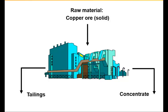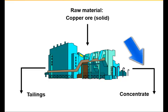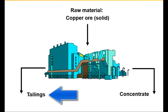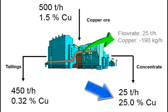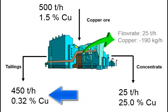To illustrate the process of data reconciliation, let's consider a copper concentrator plant with one feed and two outputs: the copper concentrate and the tailings. The solid mass flowrate and the copper content are measured for each stream. For the feed, 500 tons per hour is measured and the copper content is 1.5%. For the concentrate, 25 tons per hour and the copper content is 25%. For the tailings, 450 tons per hour and the copper content is 0.32%.